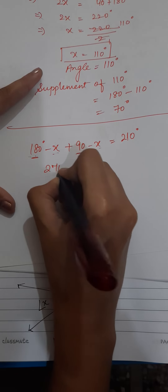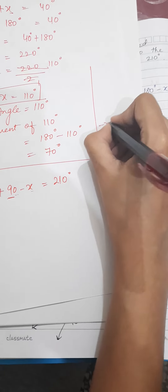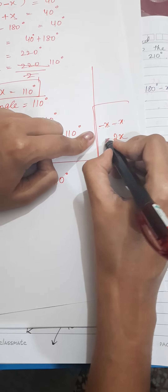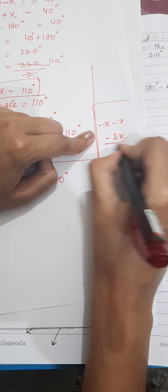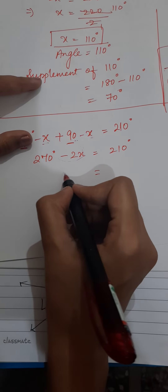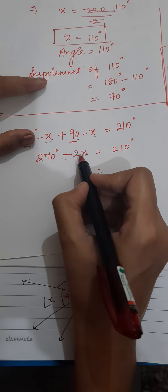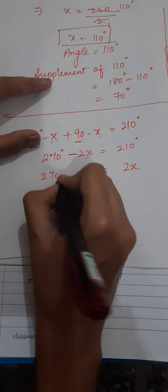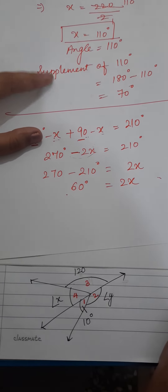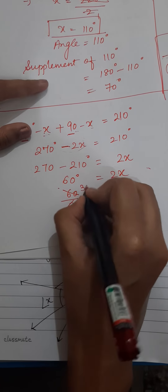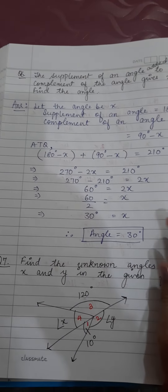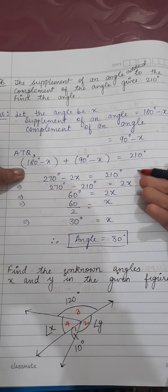Solving: 180 + 90 = 270, and -x - x = -2x. So 270 - 2x = 210. Rearranging to keep the variable positive: 270 - 210 = 2x, which gives 60 = 2x. Therefore x = 60/2 = 30 degrees. The angle is 30 degrees. You can see the solution — supplement and complement added, we did the calculation and the answer is 30 degrees.